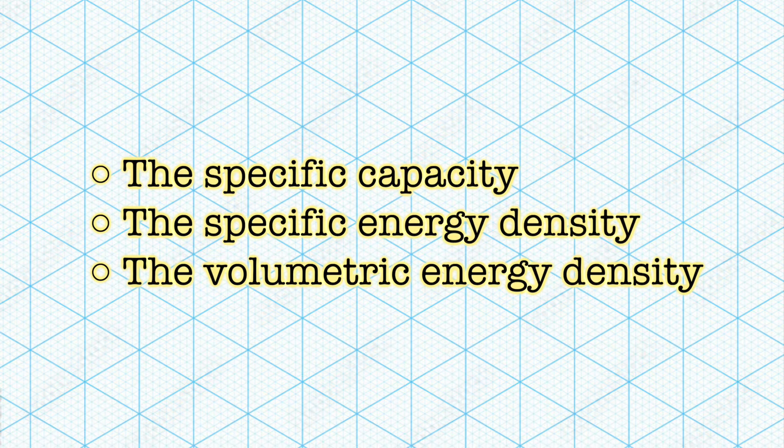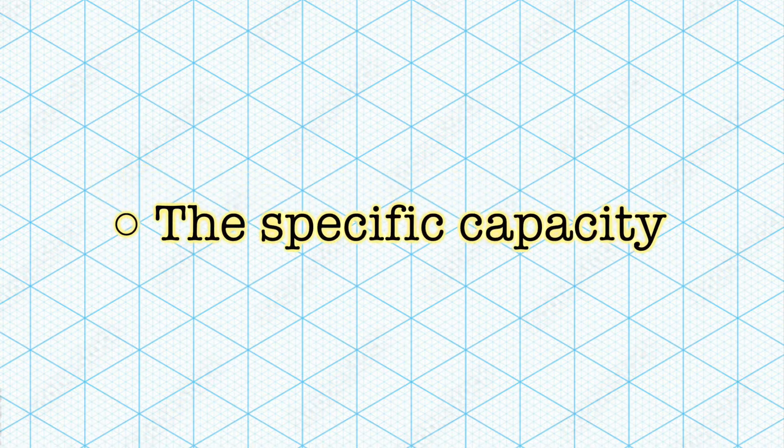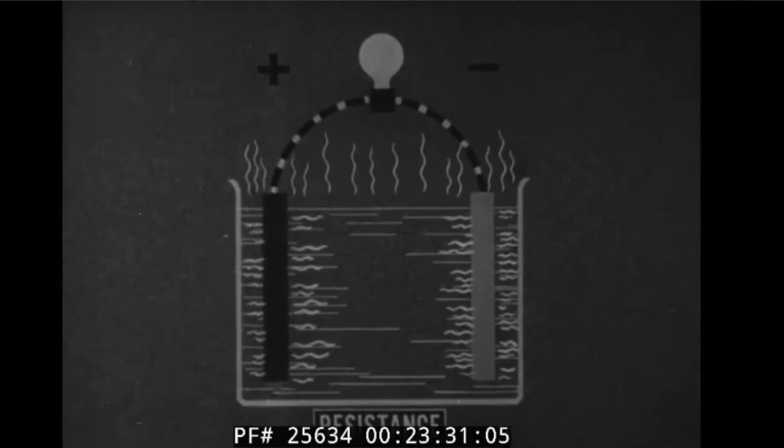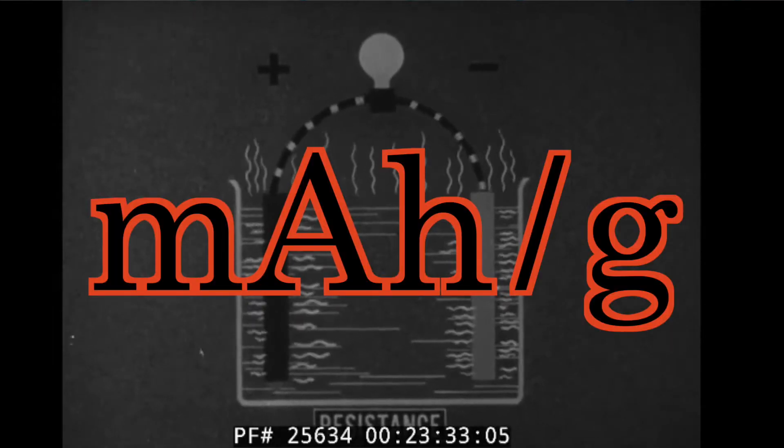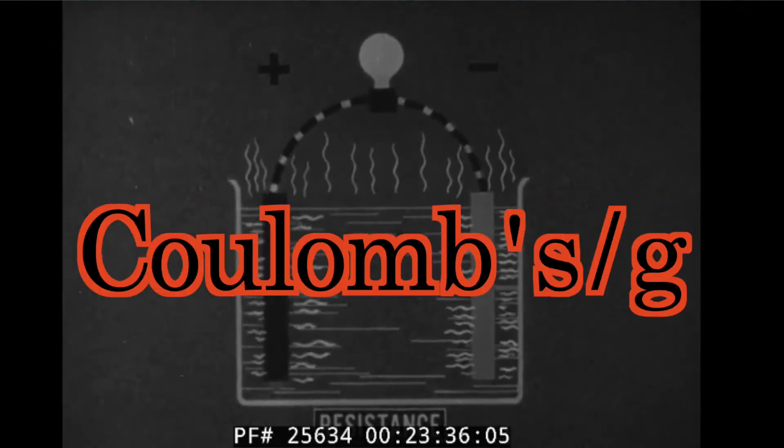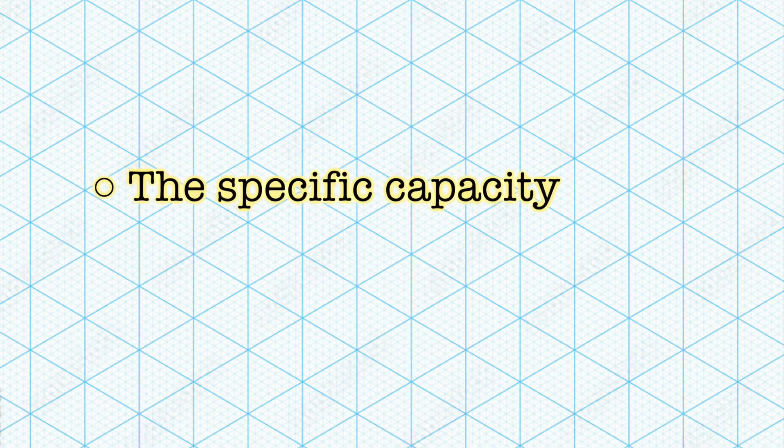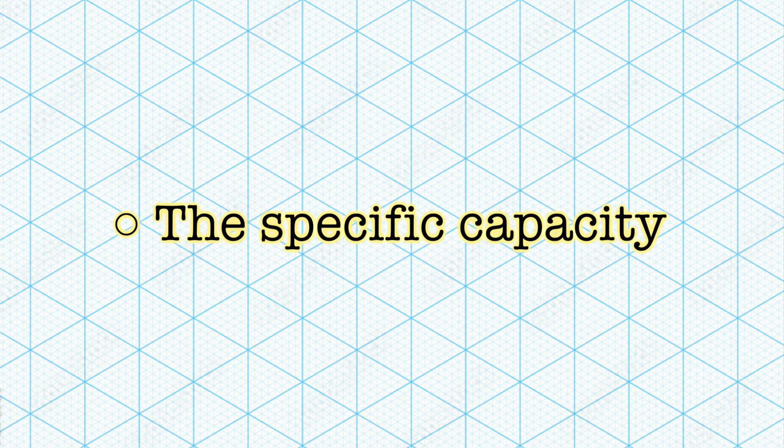Specific capacity when it comes to batteries is most commonly provided as milliamp hours per gram. This could also be represented as coulombs per gram, amp hours per kilogram, and any other assortment. This represents how much energy can be stored in one gram of a given element that is transferable in the redox reaction.